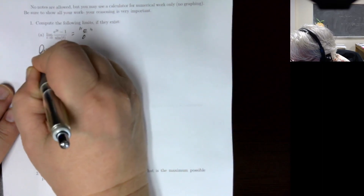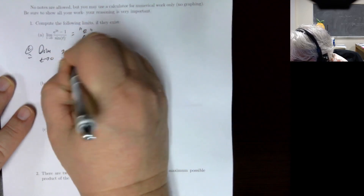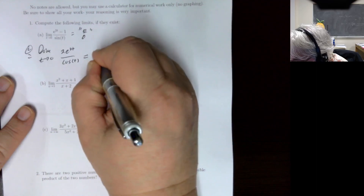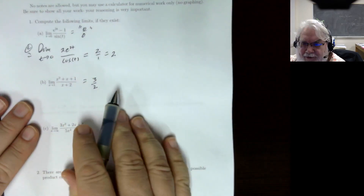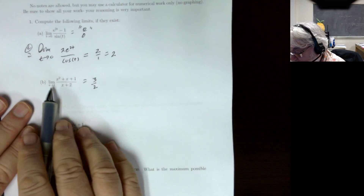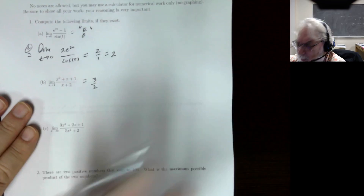When we take the limit as t goes to 0 using L'Hôpital's rule, we take the derivative of the top which is 2e to the 2t, divided by the derivative of the bottom which is cosine of t, so we get 2 over 1. For the second problem, when I plug in 1 I get 1 plus 1 plus 1 is 3 divided by 2, so that's just 3 halves — we didn't even need L'Hôpital. Be careful and check your limit before actually using L'Hôpital's rule.